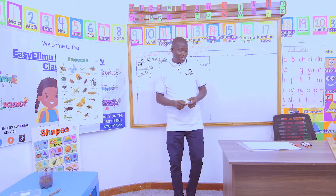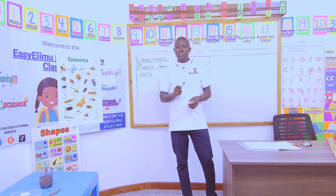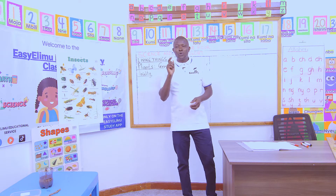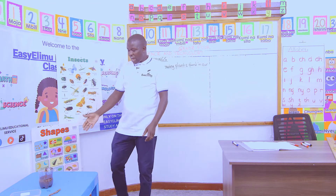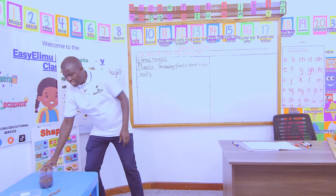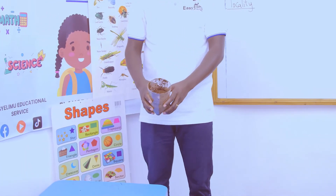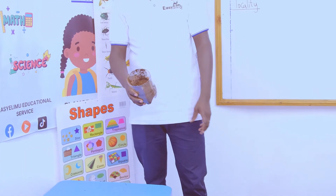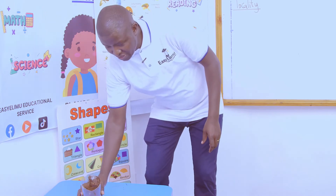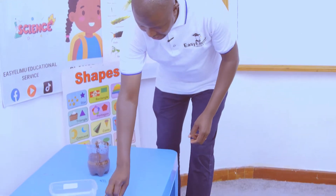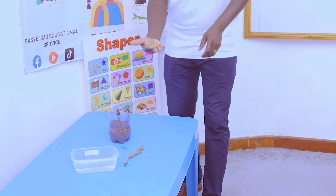In today's lesson, I want us to do a demonstration on how we plant seeds. On my nature corner, we have a sample of soil — this represents a garden we have at home. On the table we also have seeds of bean. These are the bean seeds.